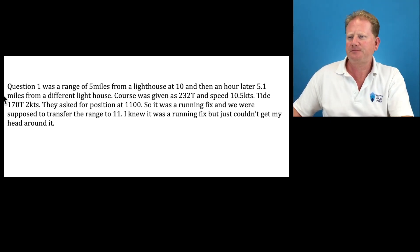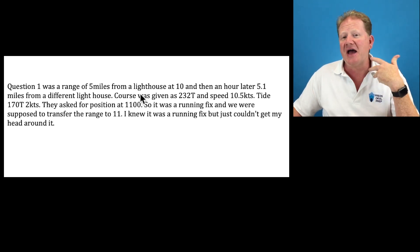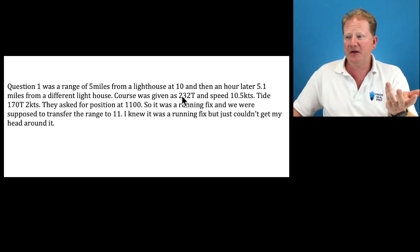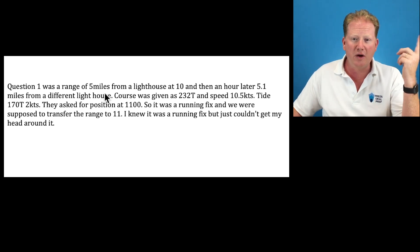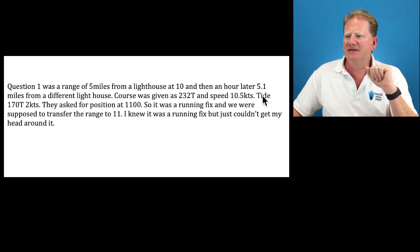There was a range of five miles from a lighthouse, a coast point. It was done apparently in restricted visibility and they were given ranges. So at 10 o'clock there was a range of five miles from lighthouse one, and then an hour later a different range from a different point. Course was given as 232 true and a speed of 10 and a half knots.